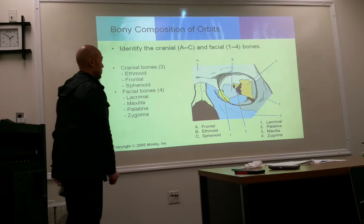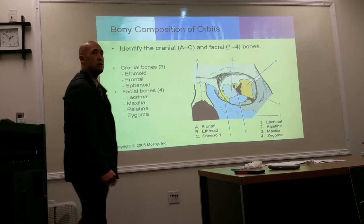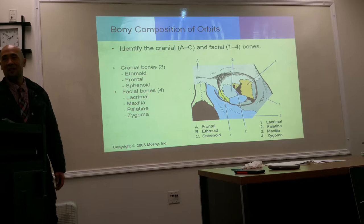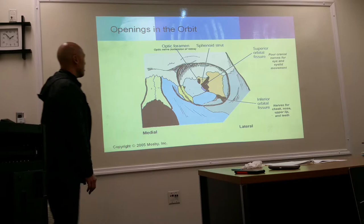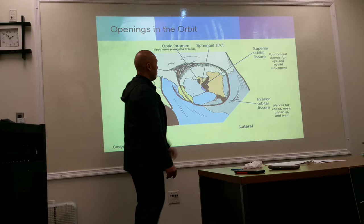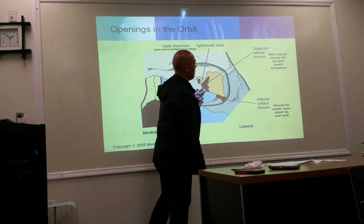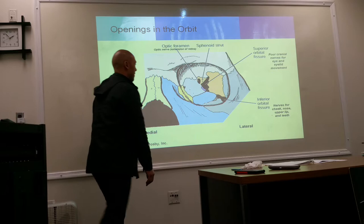If you break your orbit you are breaking many bones. The openings of the orbit are: the optic foramen — where the optic nerve goes through, an extension of the retina; the superior orbital fissure — allowing passage for four cranial nerves controlling eyelid and eye movement; and the inferior orbital fissure — allowing nerves and vessels for the cheek, nose, upper lip, and teeth.